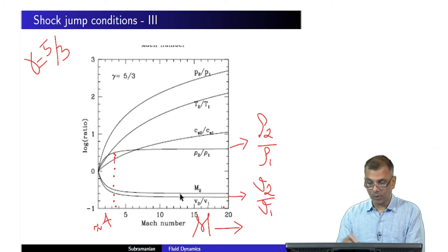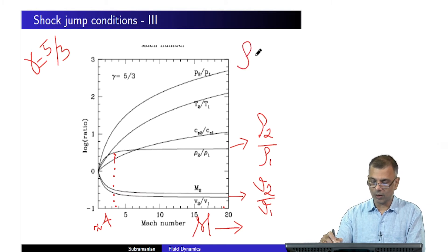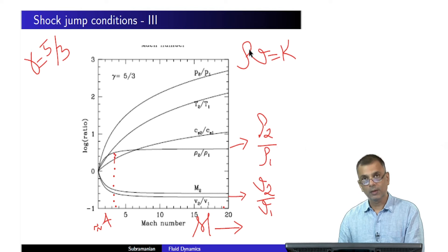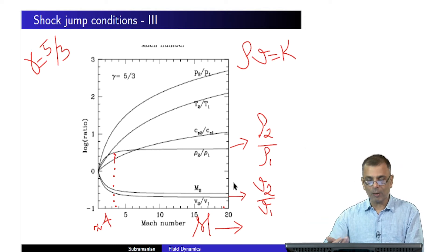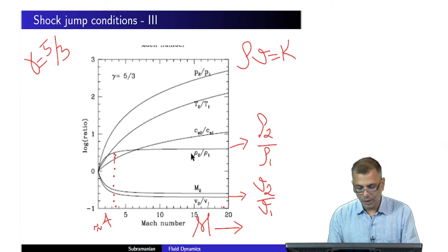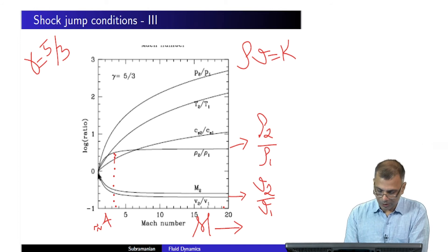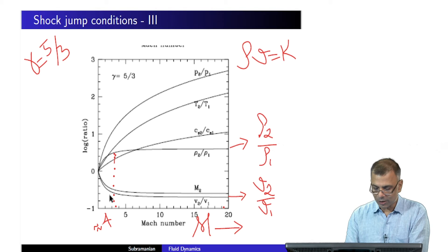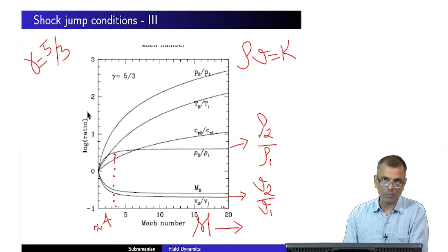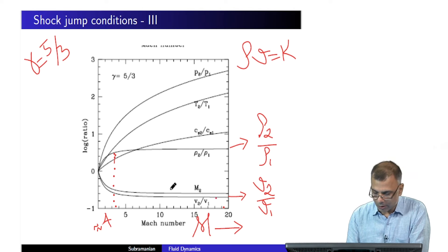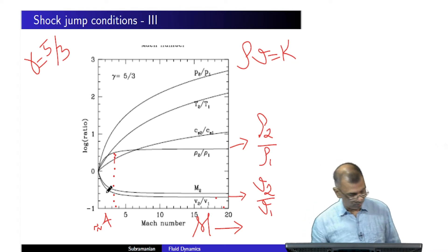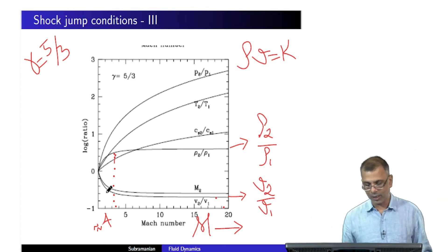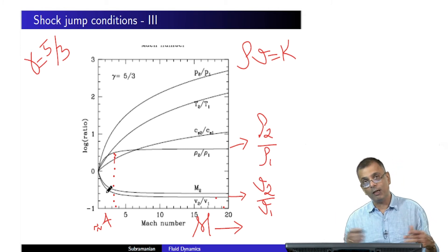The velocity jump looks like a flip of the density jump ratio, and indeed it is, because rho*v is constant — so rho1 over rho2 equals v2 over v1. If you're plotting v2 over v1, it's the exact opposite of rho2 over rho1. This also plateaus beyond a certain Mach number. People express this by saying that beyond Mach 4, you can effectively regard this as an infinitely strong shock.